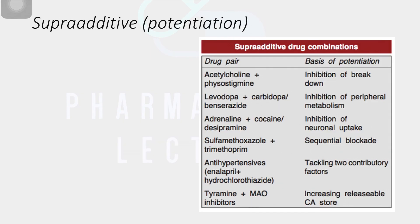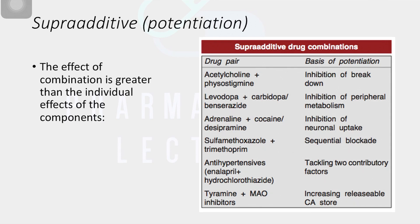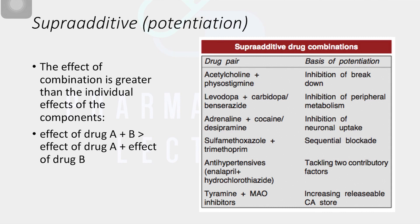Supra-additive means when we combine two drugs their effect is greater than simple addition. So effect of drug A plus B is more than effect of drug A plus effect of drug B. This is also called potentiation. These examples are very important — frequently asked in vivas. Supra-additive drug pairs include acetylcholine and physostigmine, which are cholinergic drugs that increase the cholinergic system.